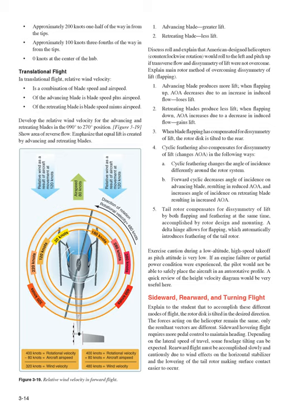Exercise caution during a low-altitude, high-speed takeoff as pitch attitude is very low. If an engine failure or partial power condition were experienced, the pilot would not be able to safely place the aircraft in an autorotative profile. A quick review of the height-velocity diagram would be very useful here. Sideward, rearward, and turning flight: to accomplish these different modes of flight, the rotor disc is tilted in the desired direction. Sideward hovering flight requires more pedal control to maintain heading. Rearward flight must be accomplished slowly and cautiously due to wind effects on the horizontal stabilizer and the lowering of the tail rotor making surface contact easier to occur.